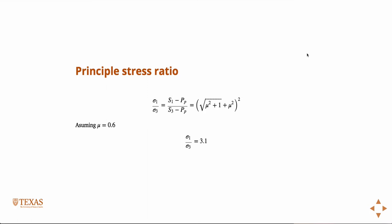If you know one of the stresses, then the maximum is just going to be a factor of 3.1, either divided by or multiplying, depending on which one you know. This theory is called frictional faulting theory.